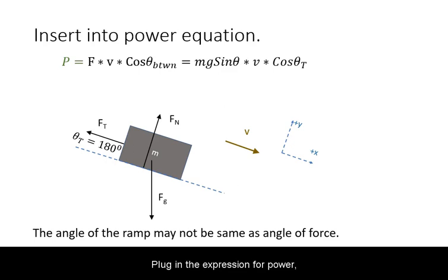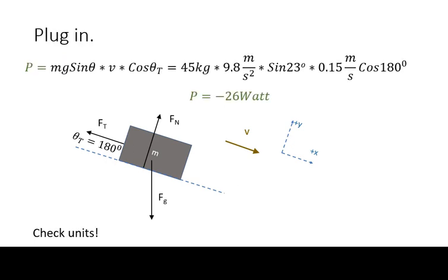Plug in the expression for power, making sure to differentiate between relevant angles. Plug in and solve. To check the units, keep in mind that kilograms times meters per second squared is Newtons, Newtons times meters is joules, and joules per second are watts.